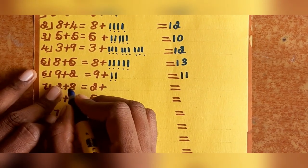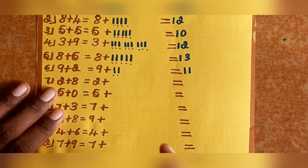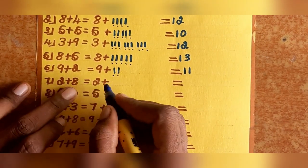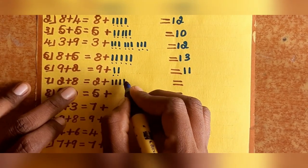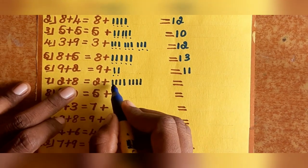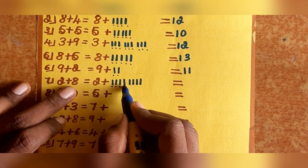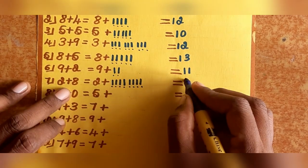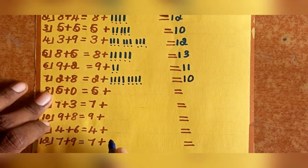Example 8: 2 plus 8. Keep 2 in the mind and tally 8. Count 8 numbers: 3, 4, 5, 6, 7, 8, 9, 10. So 2 plus 8 equals 10.